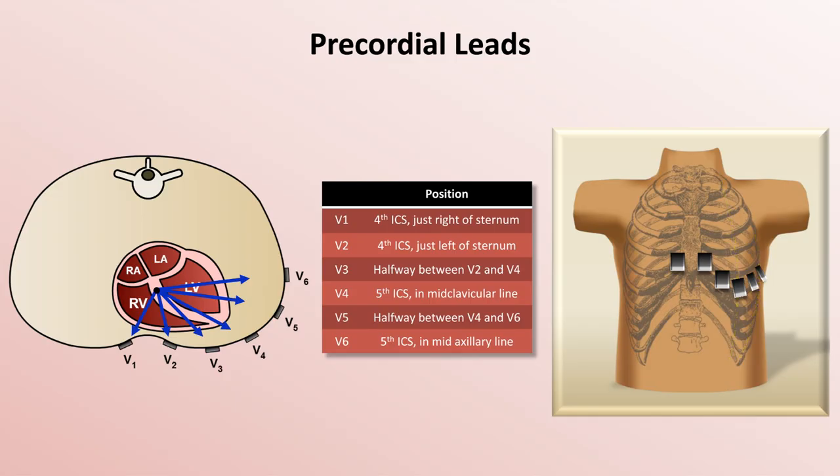I feel compelled to stress that the placement of these six electrodes by various healthcare professionals is usually incorrect. The most common mistake is to place V1 and V2 in the second or third intercostal space instead of the fourth.